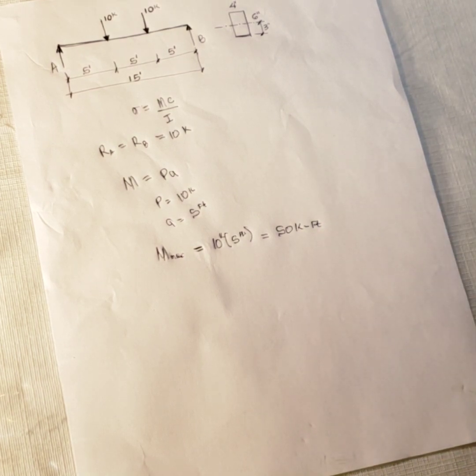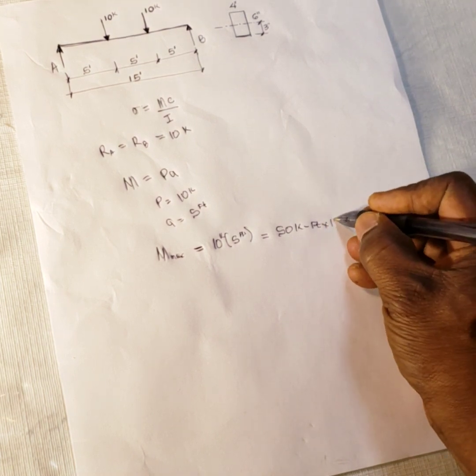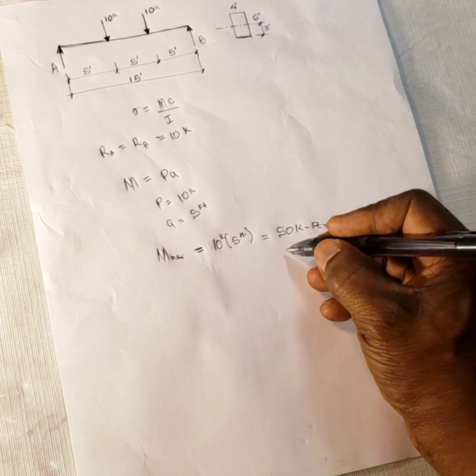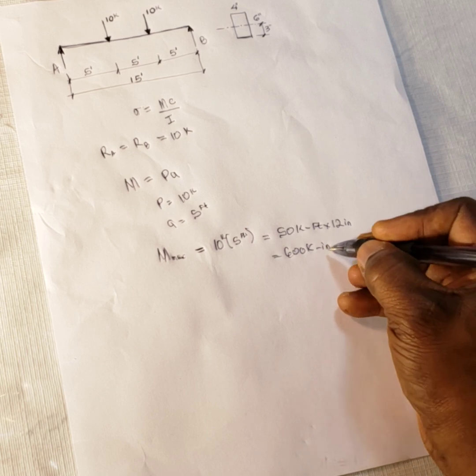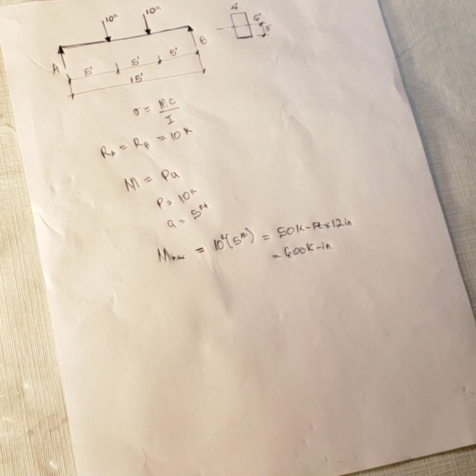Now, for the sake of your formula and for the sake of your unit, you realize that your bending stress has to be in either pound per square inch or kip per square inch. And so you have your moment in kip foot. So you have to transform that kip foot unit to kip inch. So you multiply this 50 kip foot by 12 inches to arrive at kip inch. That gives you 600 kip inch. So you are done with your moment. That's your maximum moment for this beam.